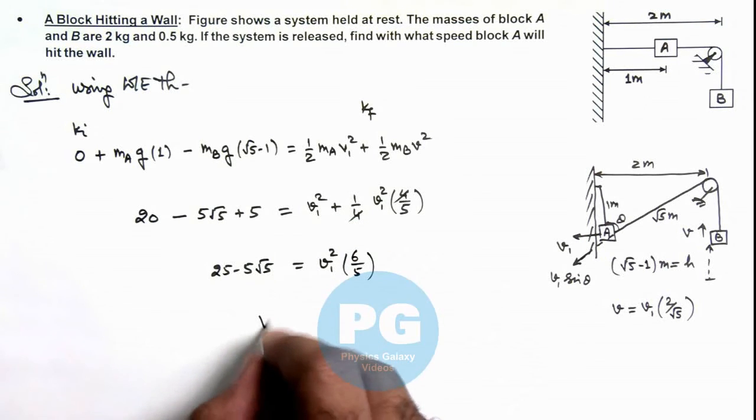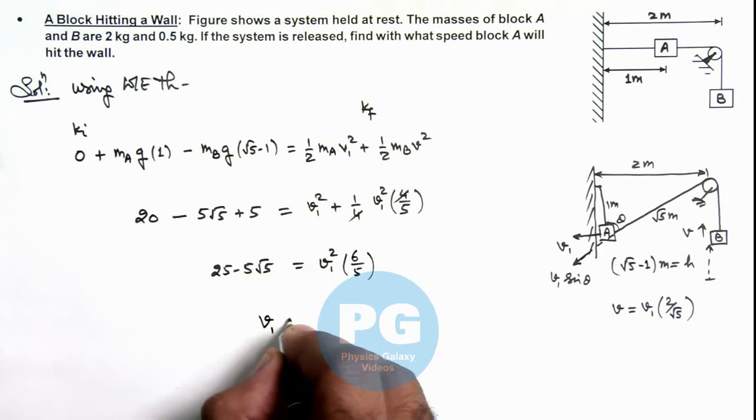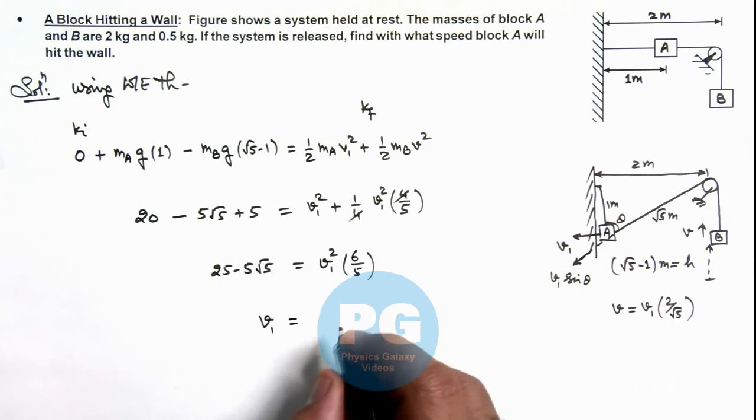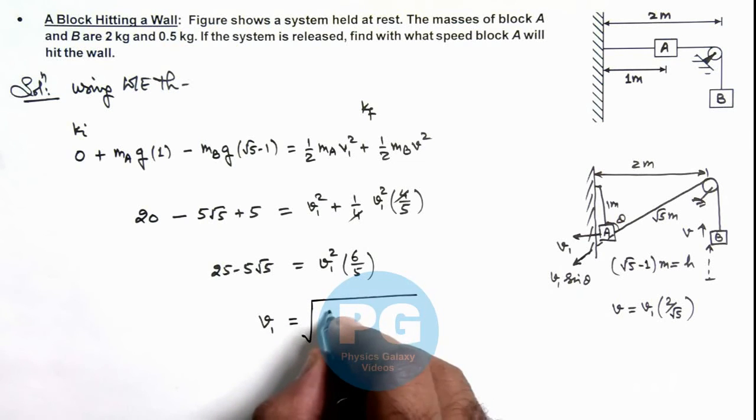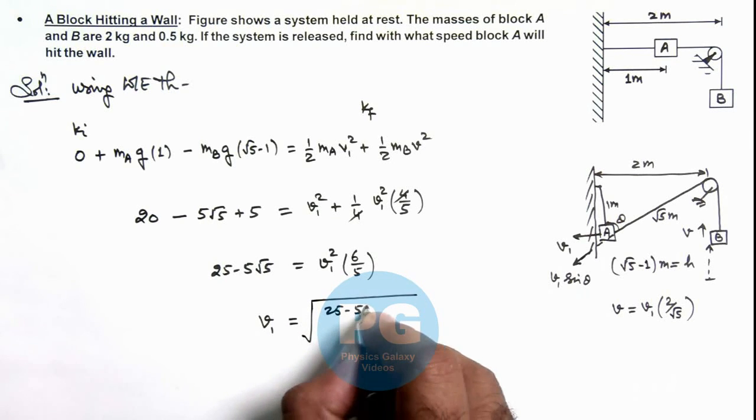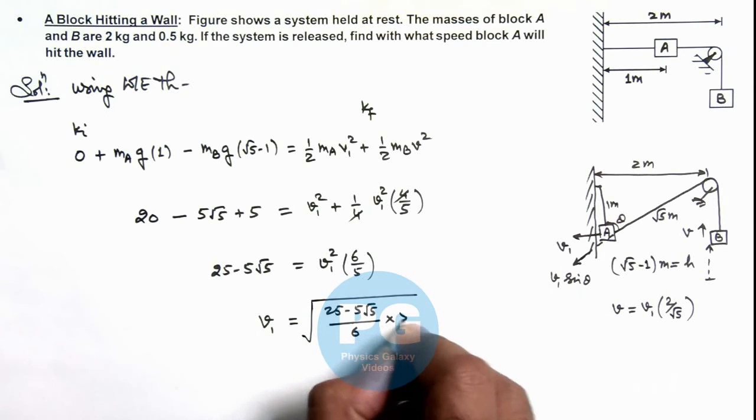So this will give us the speed of block A, v1, with which block A will hit the wall. This is under the root: 25 minus 5 root 5 divided by 6 multiplied by 5.